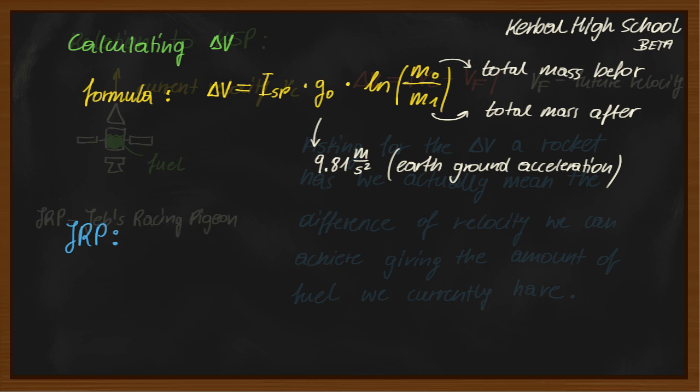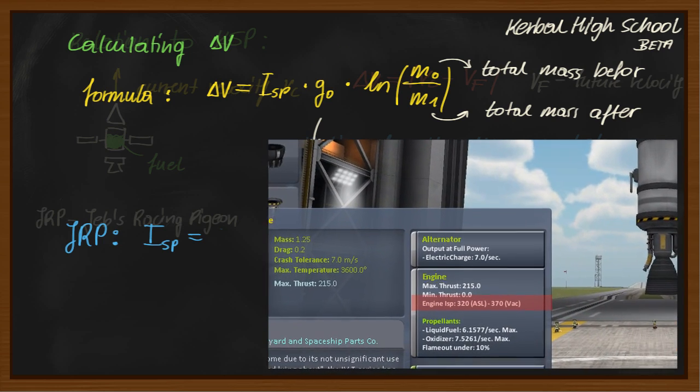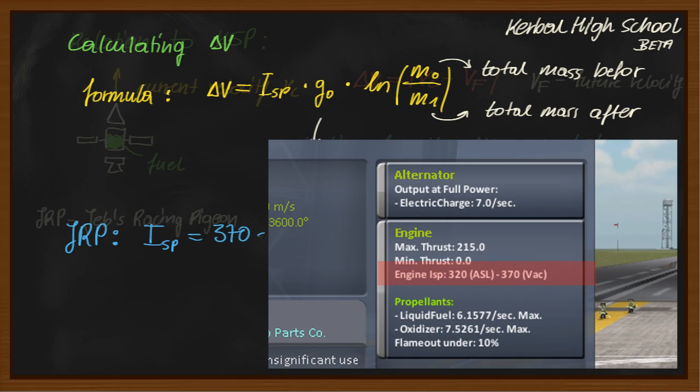So, that's for the theory, but I know what we are waiting for. Let's try it in KSP. This is our specific impulse in vacuum. It is 370 seconds.